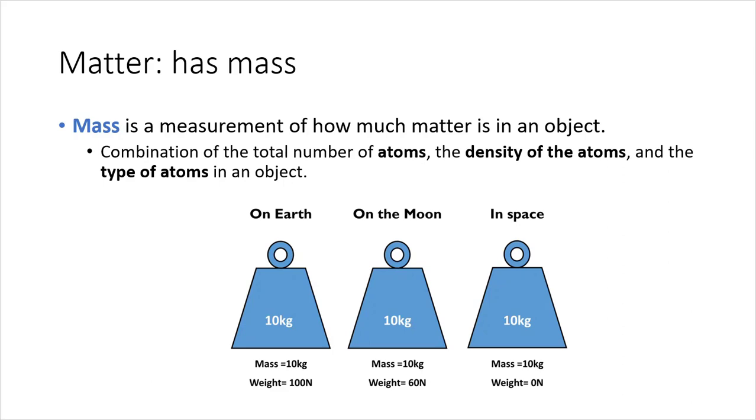How much matter is in an object is a relation to how many atoms are in that object, the density of those atoms, how tightly packed in there, and what type of atoms are they. Is it going to be mostly oxygen atoms or carbon atoms or are we going to have some lead atoms in there? The type of atoms and which element they come from can greatly influence the mass of an object.